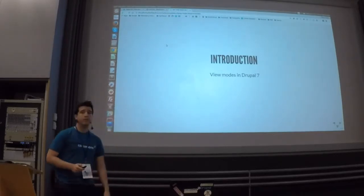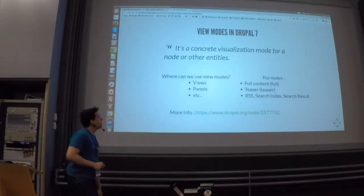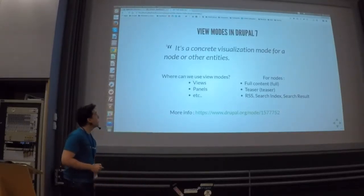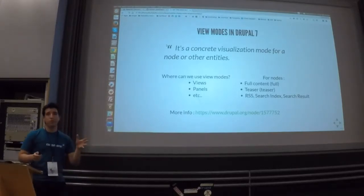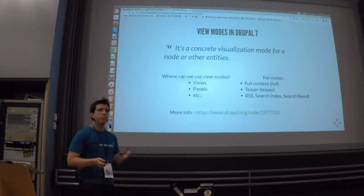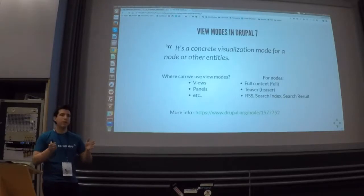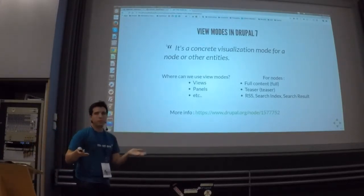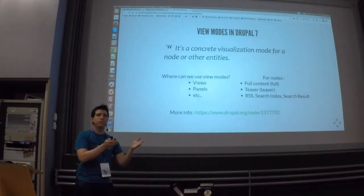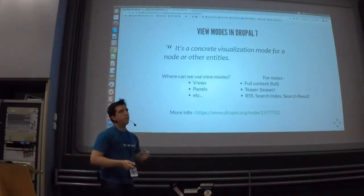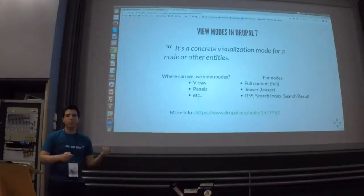Introduction to view modes in Drupal 7. First of all, I would like to say what a view mode is. A view mode is simply a way to display content in your project. For instance, in a typical news section, you will have a list of news and the detail page of a news article. Those are the view modes — the listing view of the news and the detail of the news. Every single way you can display your content is a view mode.